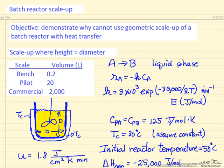In this example, I'm going to look at what happens if we try a direct geometric scale-up of a batch reactor that has heat transfer. By geometric scale-up, I mean that we'll make the reactor 100 times larger, for example, while keeping the relative dimensions the same. To make the calculations easy, I'm going to look at a case where the height of the reactor is equal to the diameter.